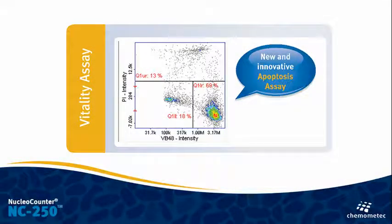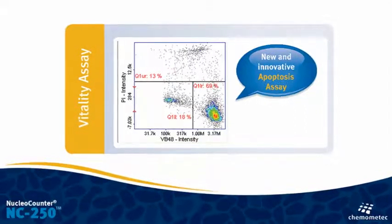The Nuclear Counter NC250 also offers the world's fastest apoptosis assay. Just add Solution 6 to your cell sample, load the slide and press run.